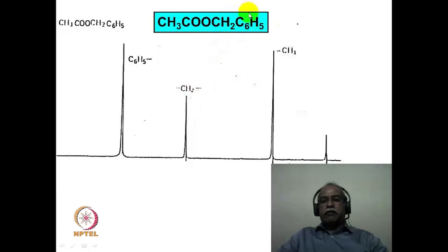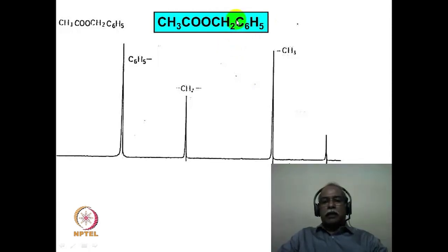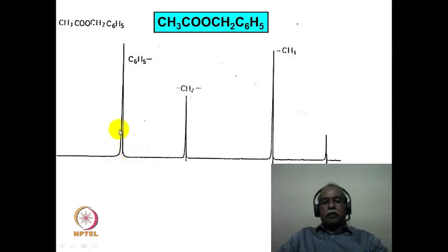The monosubstituted benzene phenyl derivative should have appeared as a multiplet because the ortho, meta, and para hydrogens are not chemically equivalent and should give three different chemical shift values. However, the CH2 group is not a strongly electron-donating or withdrawing group, so it has little electronic influence on the phenyl ring. As a result, the ortho, meta, and para hydrogens accidentally come in the same chemical shift region, appearing as what seems to be a singlet. Anytime a multiplet is observed in the aromatic region of about 7 to 7.5 ppm with 5-hydrogen intensity, the inference is that it is a monosubstituted phenyl derivative.